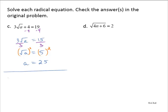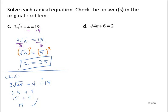Let's check: is 3 times the square root of 25 plus 4 equal to 19? That's 3 times 5 plus 4, which is 15 plus 4, which is 19. It checks out. I'm confident in the solution.